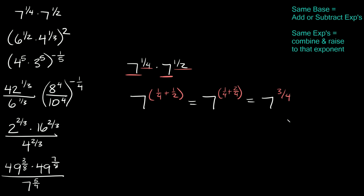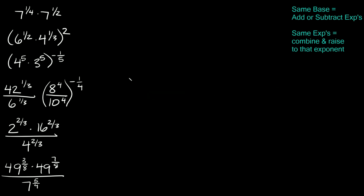Fractions are kind of gross, but it's actually not too bad. Next we have 6 raised to the one-half times 4 raised to the one-third, and that whole thing is raised to the second power. You can see that we have two different bases — a six and a four — and two different exponents, one-half and one-third, so there's nothing really to simplify right off the bat.